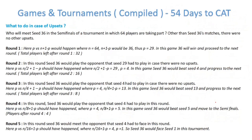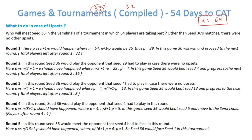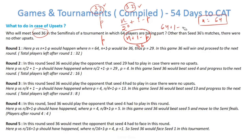Now let's take a scenario with upsets. For example: who will meet seed 36 in the semi-finals of a tournament with 64 players, where other than seed 36's matches there were no upsets? With n = 64, divide into two halves of 32. Seed 36 is in the lower half. In round 1, seed 36 plays the player p where n plus 1 minus p equals 36. So 65 minus p equals 36, meaning p equals 29. Seed 36 will play and beat seed 29 in round 1.